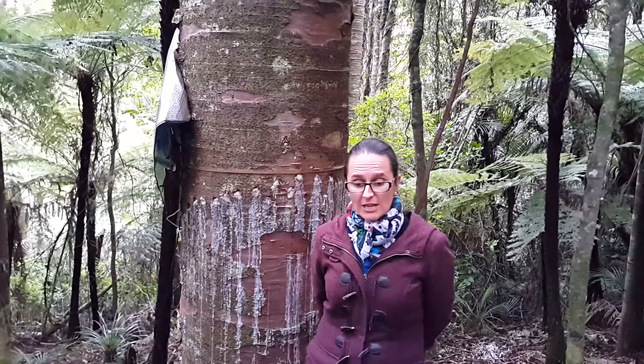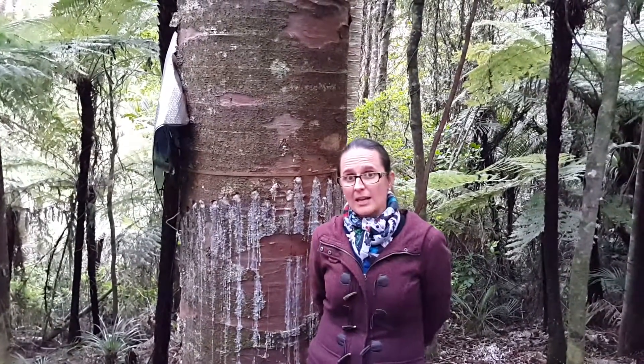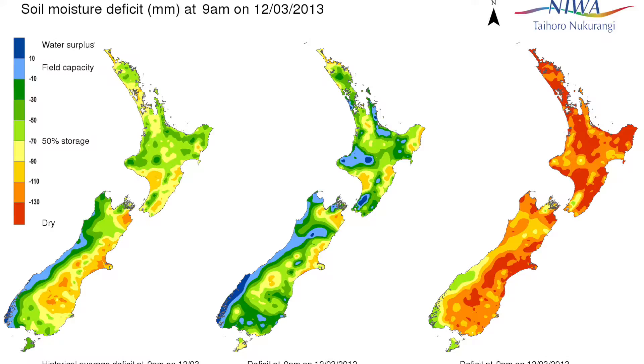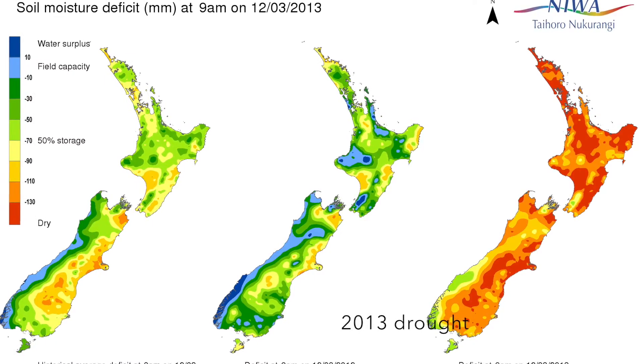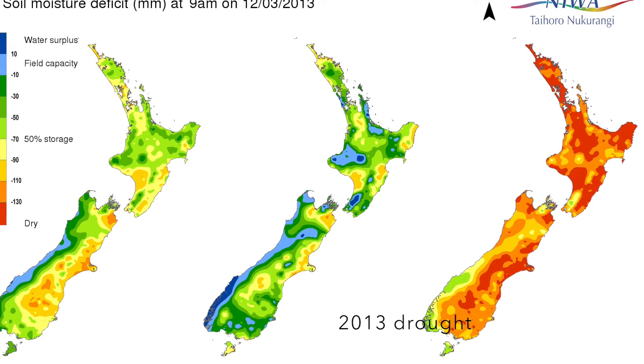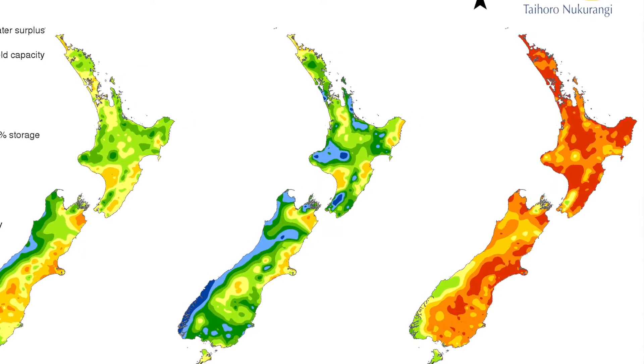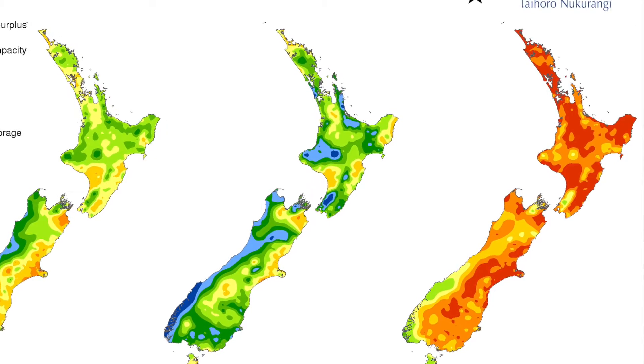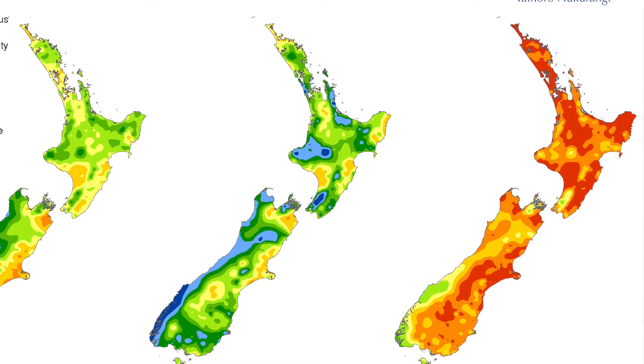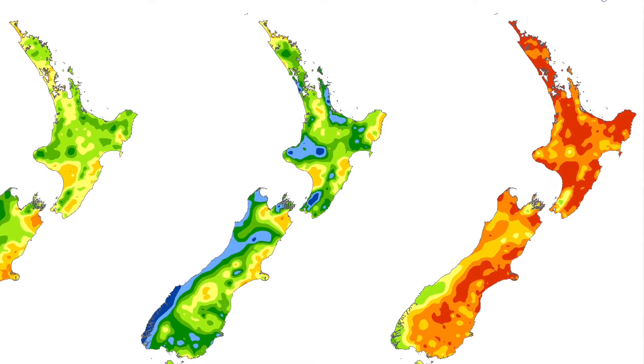In 2013 we had the most severe drought in 70 years and it was spread across the country. It cost about a billion dollars to the economy through lost agricultural production, but we don't really know what this drought means for our natural ecosystems.